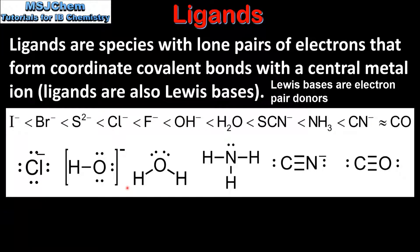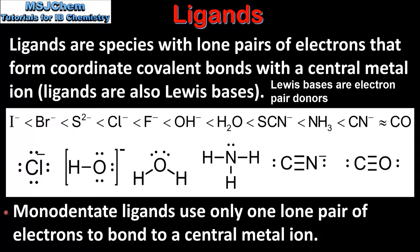The ligands use these lone pairs of electrons to form a coordinate covalent bond with a central metal ion. The examples we see here are monodentate ligands, which use only one lone pair of electrons to bond to a central metal ion.